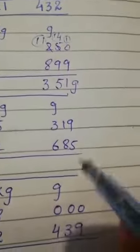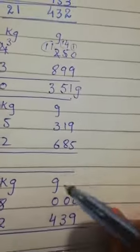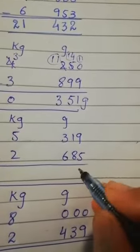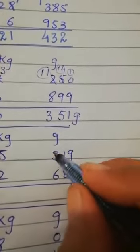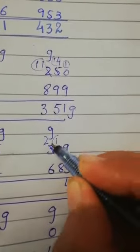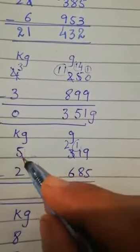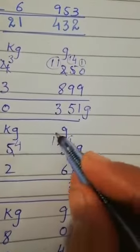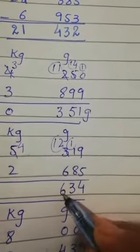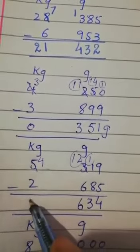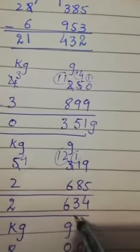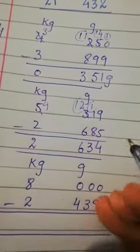Now we will minus. [Working through subtraction steps] 4 raha gaya ye 12 ban ge. 12 me se 6, 6. 4 me se 2, 2. 2 kilogram 634 gram Humer ne zyada apple kharide. Question number hamara hai 6.